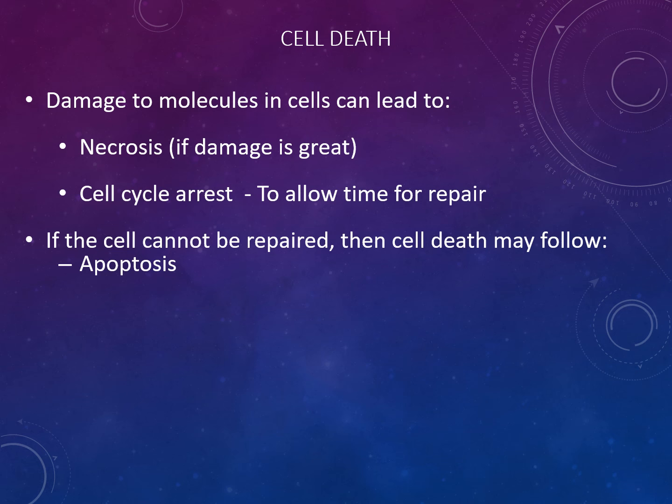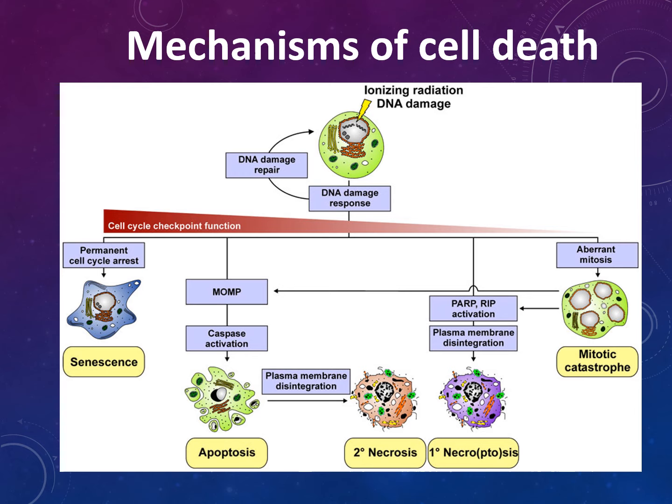Hello, good afternoon. Today we are looking at apoptosis and necrosis. Damage to molecules and cells can lead to necrosis if the damage is great, and cell cycle arrest to allow time for repair. If the cell cannot be repaired, then cell death may follow, known as apoptosis — programmed cell death. Here's a summary of the mechanisms of cell death: apoptosis, necrosis, mitotic catastrophe, and senescence.